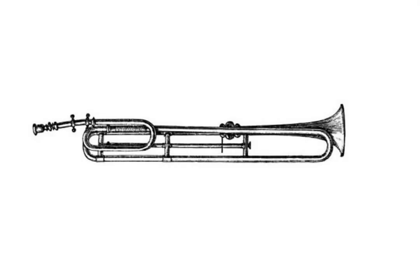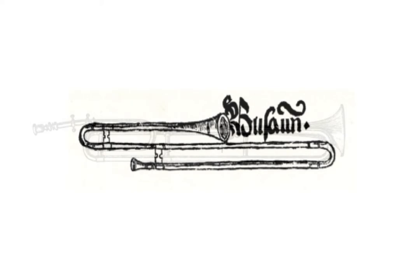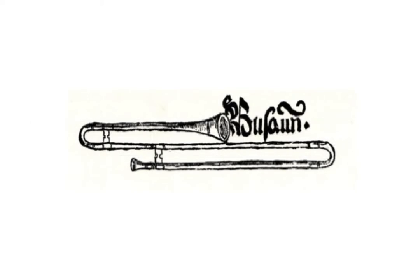The trombone appeared after the mid-15th century, evidently as the development of the Renaissance light trumpet, and until approximately 1700 was known as the sackbut. The sackbut has thicker walls than the modern trombone, imparting a softer tone, and its bell is narrower.